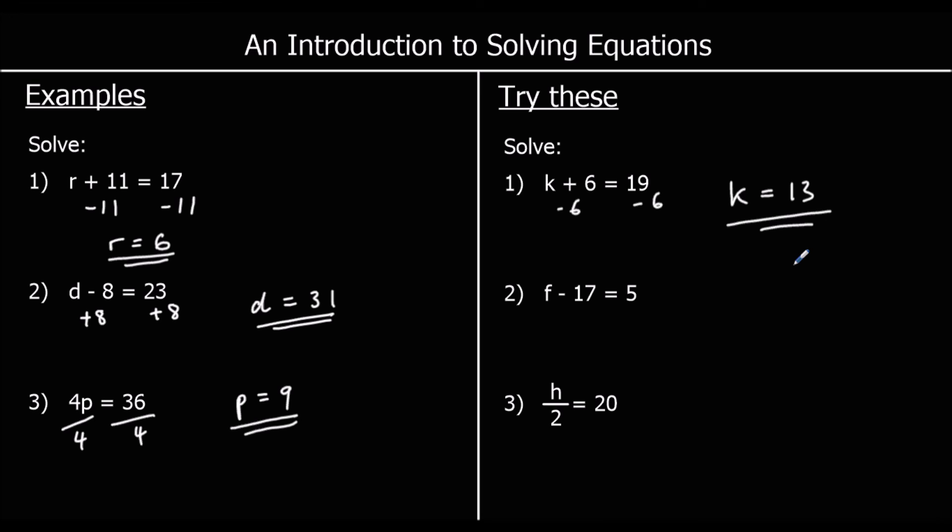F minus 17 equals 5. To get F by itself, we can plus 17 to both sides. So F is 5 plus 17, which is 22.